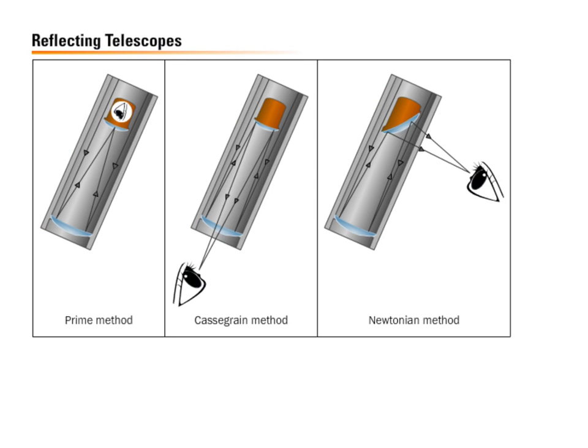The second type is a reflecting telescope. These telescopes use mirrors to reflect the light, as opposed to refract it like a lens. There are three different types. The prime method has a large aperture that allows light to come down and bounce off a mirror. Some reflecting telescopes let you sit in a cage inside the telescope and see the images projected off the mirror that way.